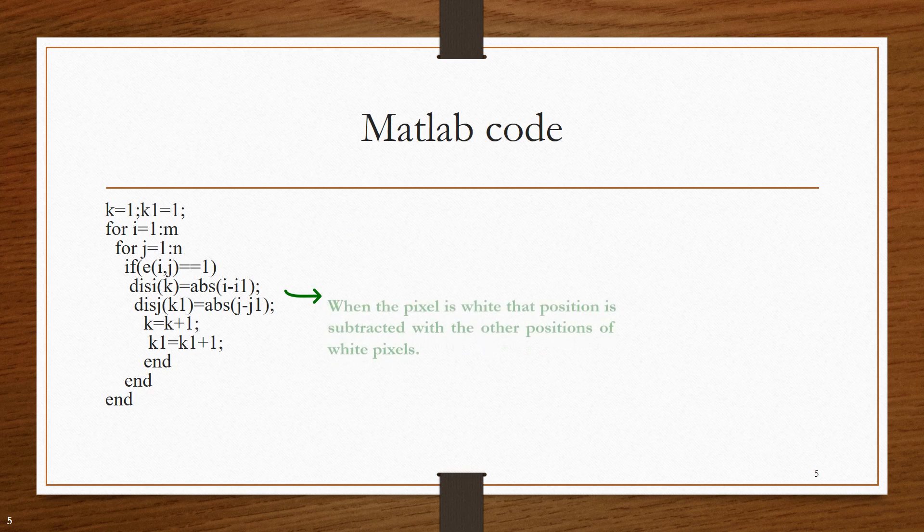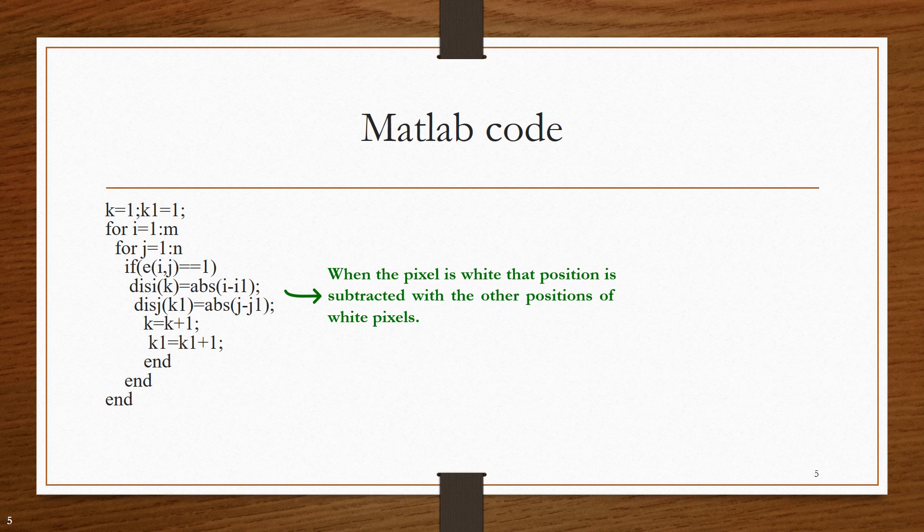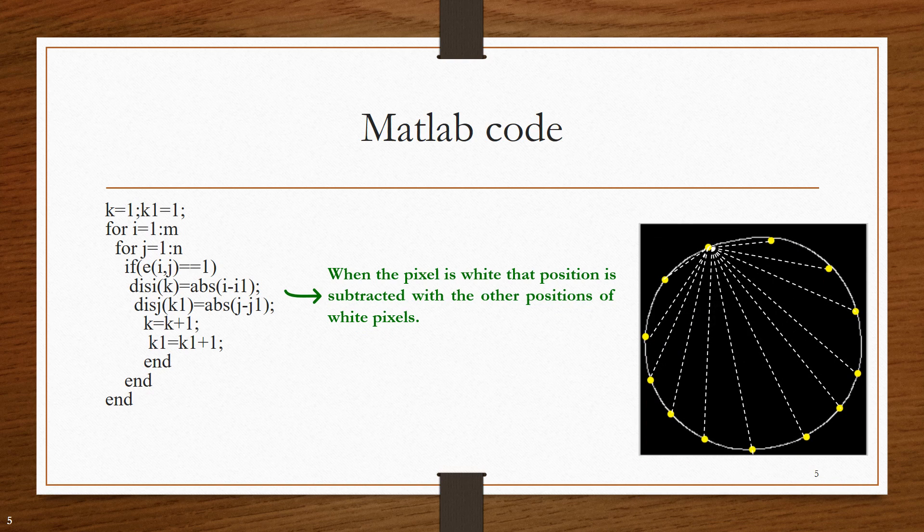In this for loop, the distance between one white pixel and other white pixel is being calculated. If a pixel is white, then its location is taken and that location is subtracted with the other white pixel's location.